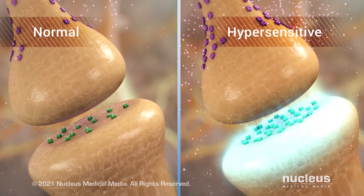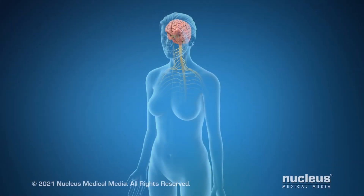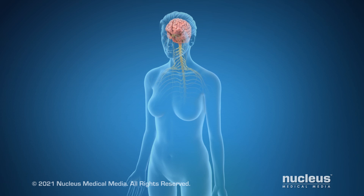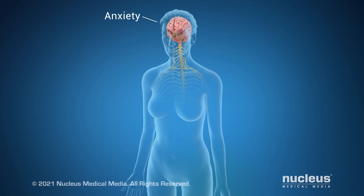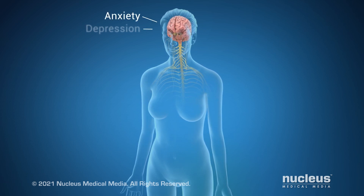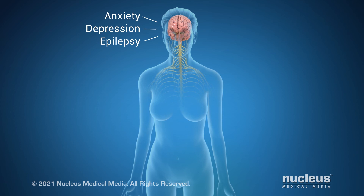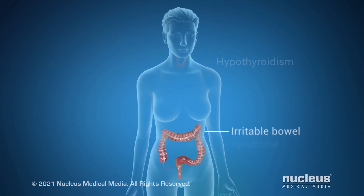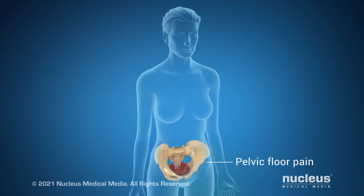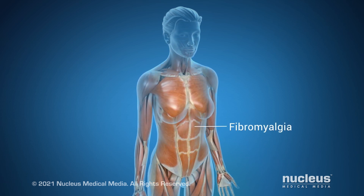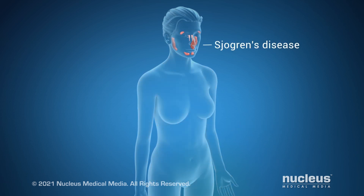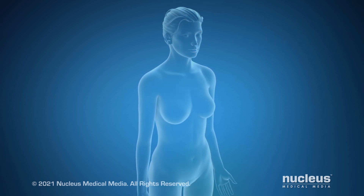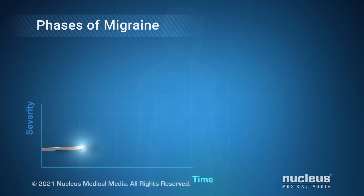These mutated genes affect the function of other parts of the body. As a result, people with migraines may also have anxiety, depression, epilepsy, hypothyroidism, irritable bowel syndrome, pelvic floor pain, fibromyalgia, Sjogren's disease, and others. Each attack typically has three or four phases.